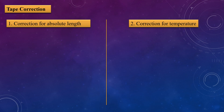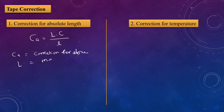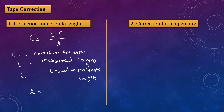Next are the tape corrections. There are seven tape corrections. The first is the correction for absolute length. The formula is: Ca = (L × c) / l, where Ca is the correction for absolute length, L is the measured length, c is the correction per tape length, and l is the designated length of tape.